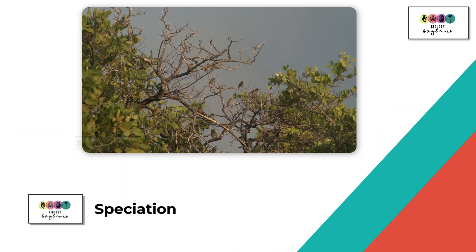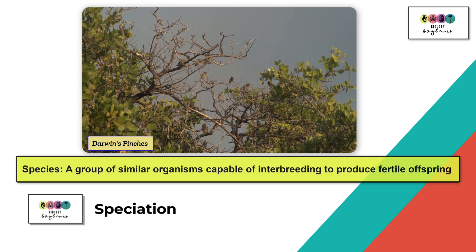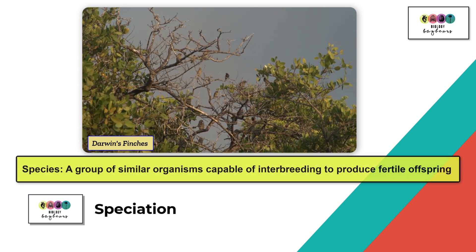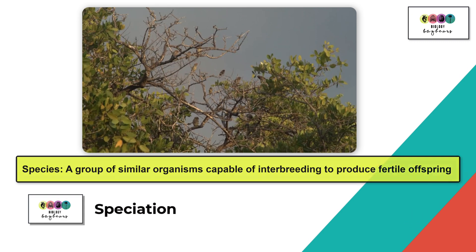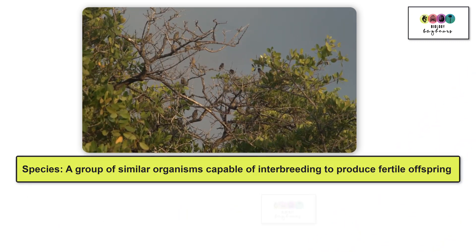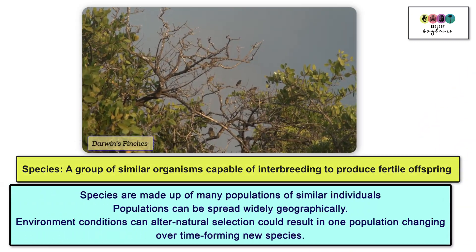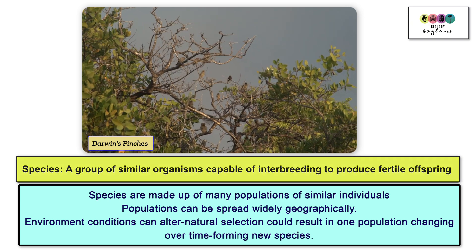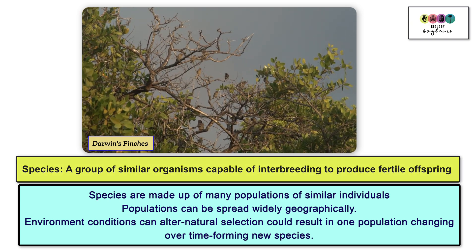Evolution can lead to the formation of new species. A species is defined as a group of similar organisms capable of interbreeding to produce fertile offspring. For our course, we just have to give a very simplistic overview — think about natural selection when explaining this.